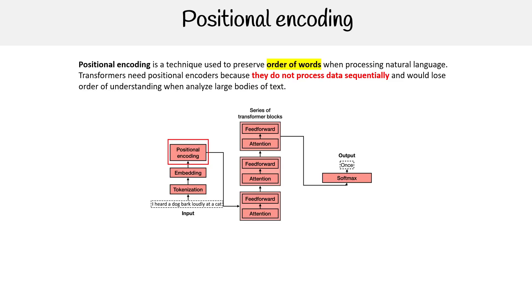Positional encoding is a technique used to preserve the order of words when processing natural language. Transformers need positional encoders because they do not process data sequentially, and would lose order of understanding when analyzing large bodies of text.